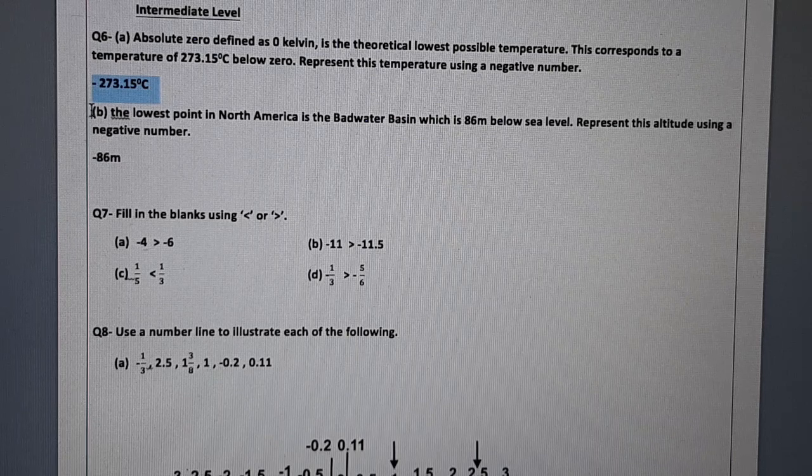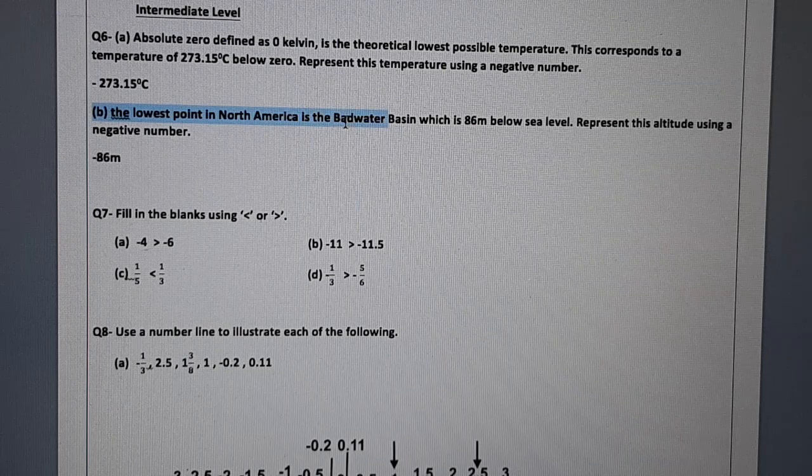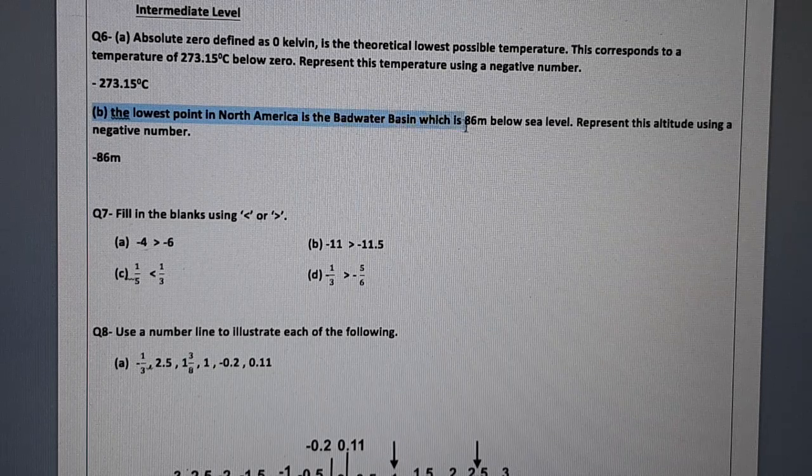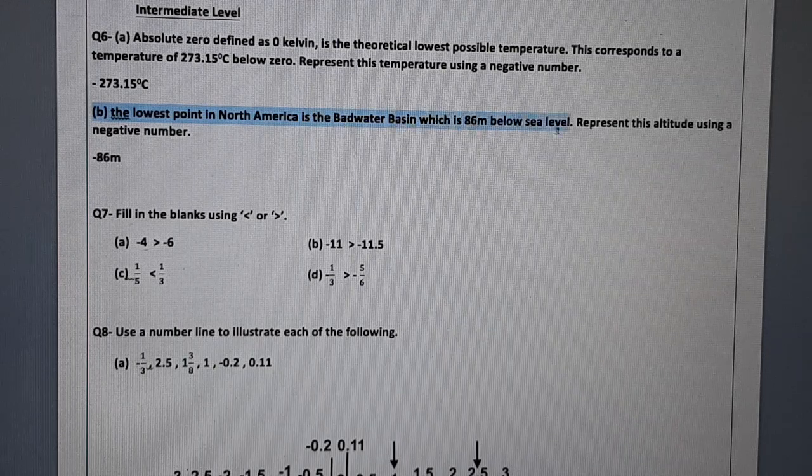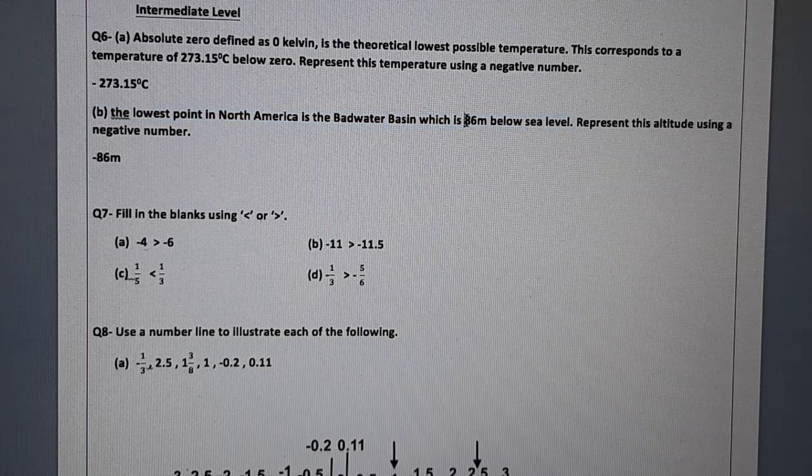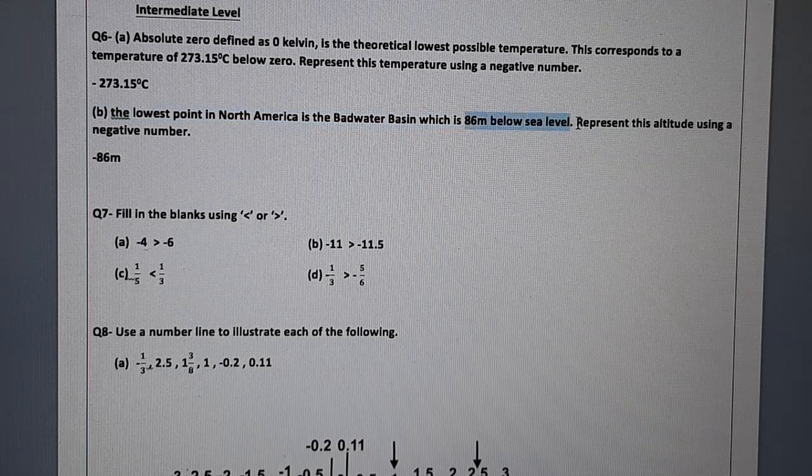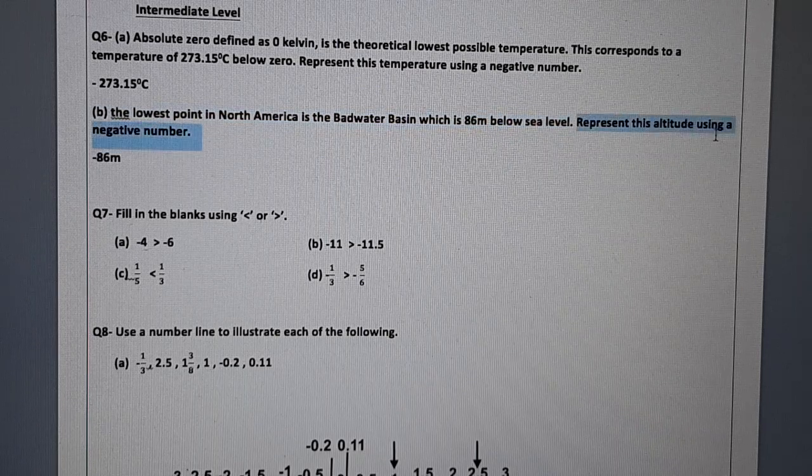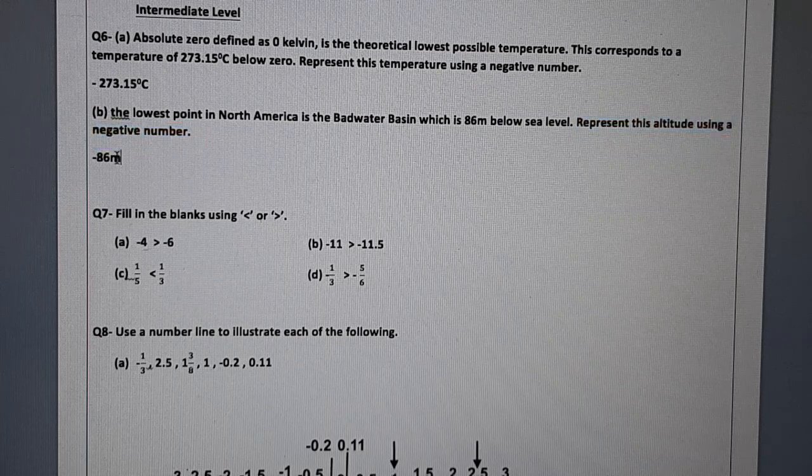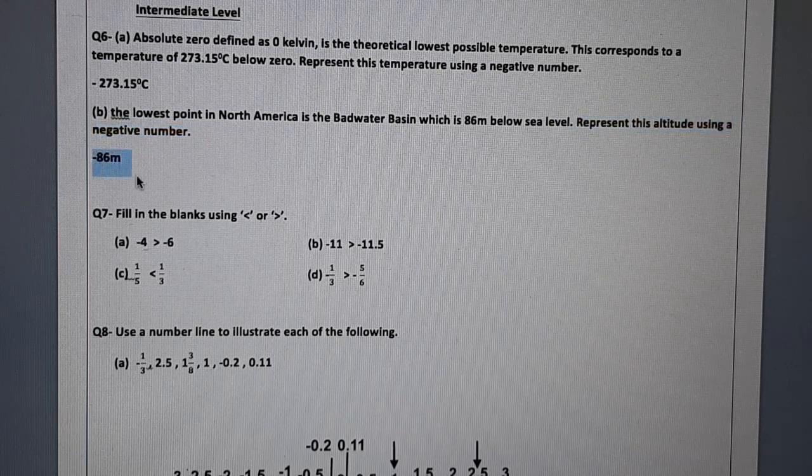Part B is the lowest point in North America is the Badwater Basin, which is 86 meters below sea level. 86 meters below. Represent this altitude using a negative number. Now below 86 meters is minus 86 meters.